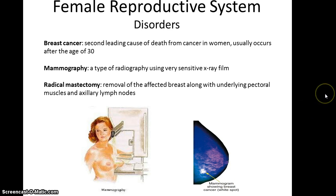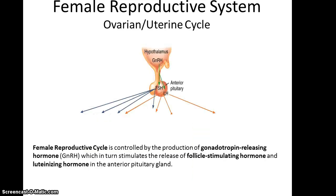Should a woman be found to have cancer, one of the more extreme treatments is a radical mastectomy, which is the removal of the affected breast along with the underlying pectoral muscles and the axillary lymph nodes. That's an extreme sort of treatment, but some women feel it's necessary.